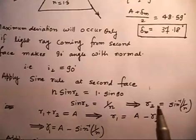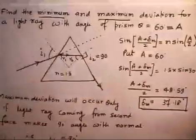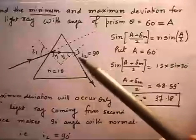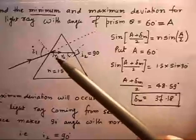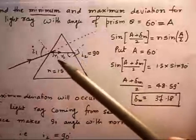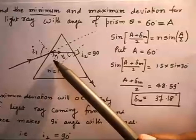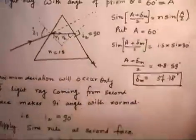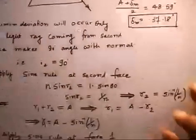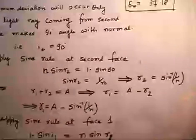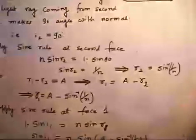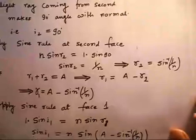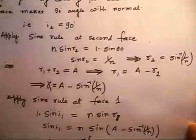We know in a prism R1 plus R2 equals A. So if I know R2, I can calculate R1 using geometry: R1 equals A minus R2. R2 is sin inverse of 1/N, so R1 equals A minus sin inverse(1/N).